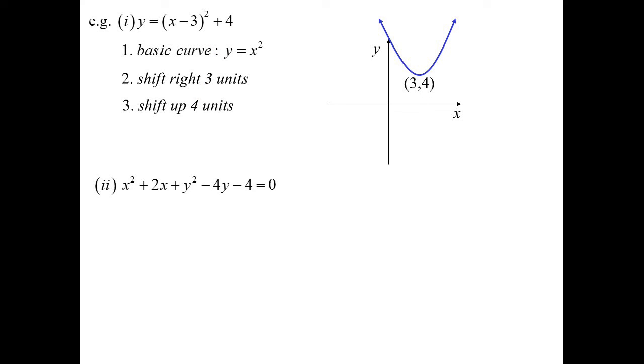x squared plus two x plus y squared minus four y minus four equals zero. Not immediately obvious what the shift is happening here. So we've got a bit of completing the squares to do. We've got to do it both on the x and on the y as well.